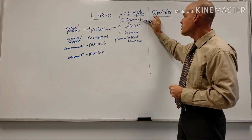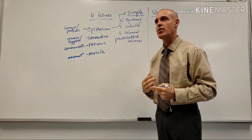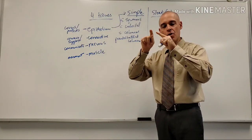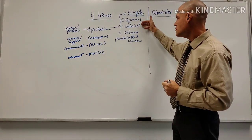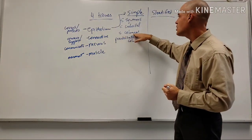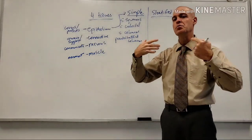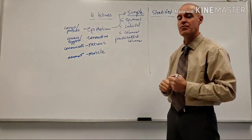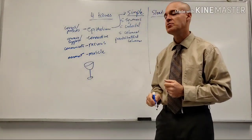Squamous simply means flat. Simple squamous is found in the inner wall of the heart - what we call the endothelium - and also the inner wall of blood vessels. Simple cuboidal is seen in mammary glands and the thyroid. Simple columnar is seen in the GI tract. Some of these cells, like simple columnar, produce mucus and contain goblet cells - a wine glass shaped cell which produces mucus.